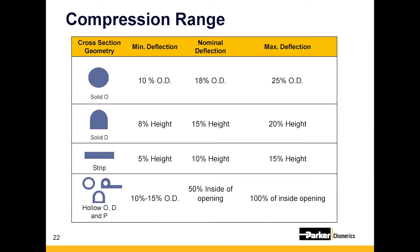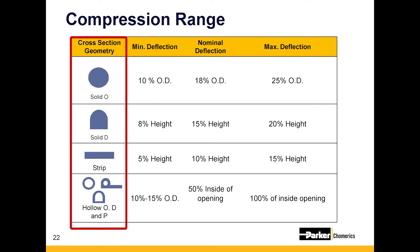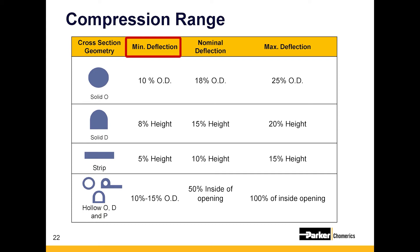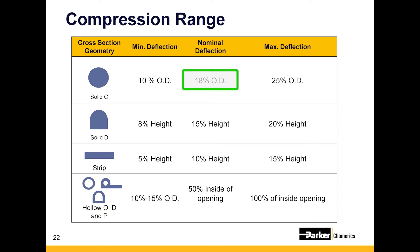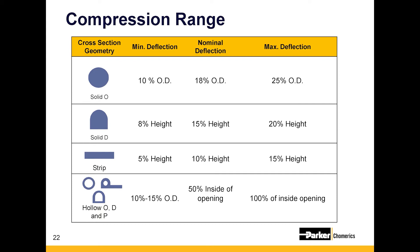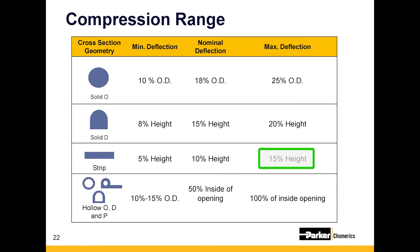Compression forces are something important to look at from the beginning — a lot of common mistakes are made around housing design. Looking at the different profile types on the chart, there's a minimum, nominal, and maximum deflection range. For a solid-O: 10% minimum, 18% nominal, and 25% maximum. For a flat strip: 5% minimum, 10% nominal, and 15% maximum of the height.